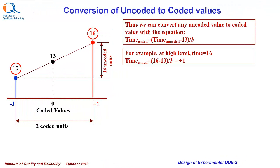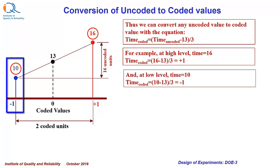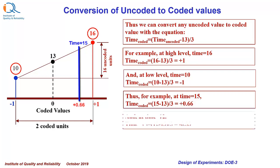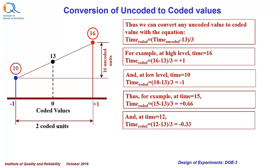For example, at high level time is equal to 16, therefore time coded can be calculated as plus 1, and at the low level where time equals 10, time coded is minus 1. At time 15, we can calculate the coded value as (15 minus 13) divided by 3, which equals plus 0.66. At time equal to 12, coded value will be (12 minus 13) divided by 3, that is minus 0.33.